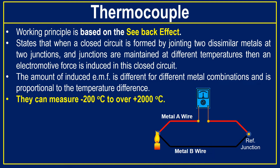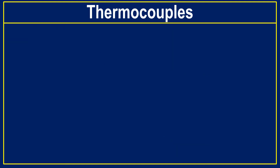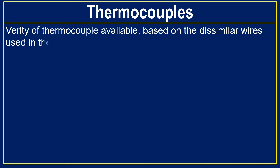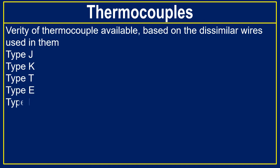The main advantage of thermocouples is their measurement range — they can measure from minus 200 degrees centigrade to 2000 degrees centigrade. There are a variety of thermocouples based on the dissimilar wires used: type J, type K, type T, type E, type N, type B, type S, and type R thermocouple. A detailed video on types of thermocouples and their properties is linked in the description box.